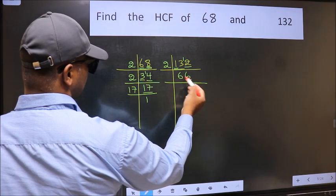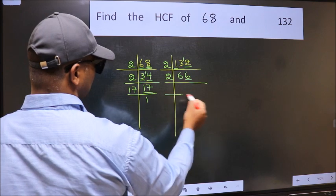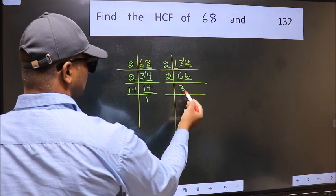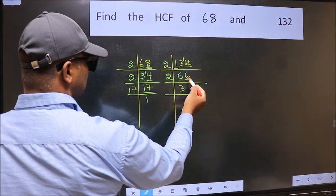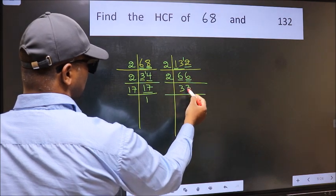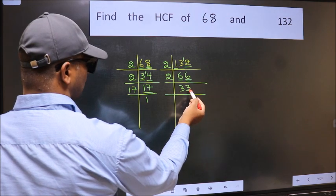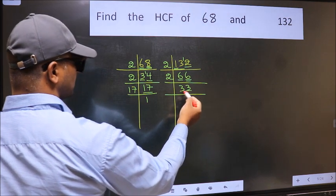Now last digit 6, even, so take 2. First number 6, when do we get 6 in 2 table? 2, 3, 6. The other number 6, when do we get 6 in 2 table? 2, 3 is 6. Now last digit 3, not even, so this is not divisible by 2.